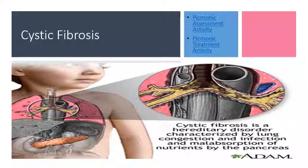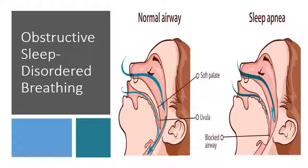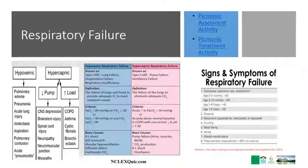Obstructive sleep-disordered breathing involves breathing that repeatedly stops during sleep due to inflammation of tissue, the tongue, or other obstructions. Treatment options include relieving the obstruction or using forced air via CPAP to keep the blocked airway open.